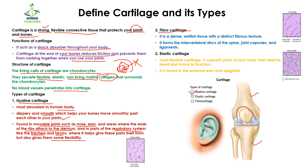The second type of cartilage is fibrocartilage. As the name indicates, fibro means it consists of fibers, and because of these fibers it is very dense. It is a whitish tissue with a distinct fibrous texture. It forms the intervertebral discs of the spine, joint capsules, and is also present in ligaments.